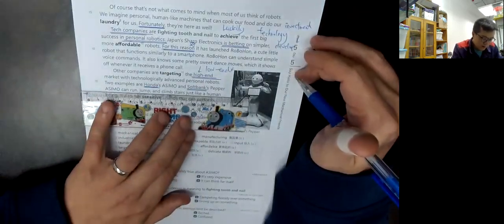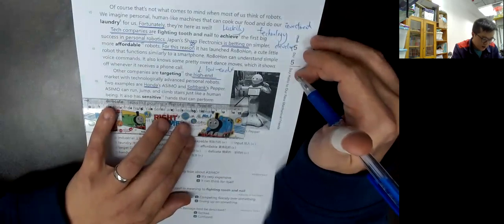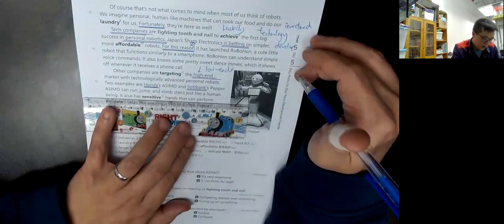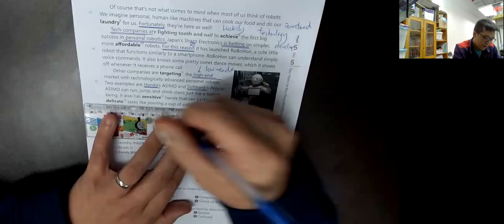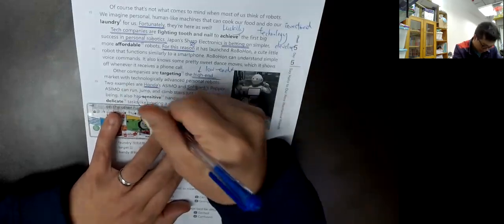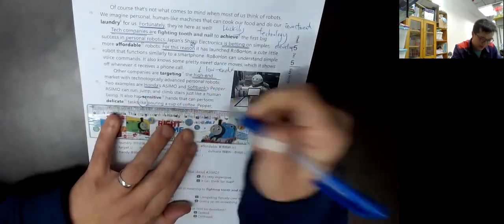ASIMO can jump, run, and climb stairs just like human beings. It also has sensitive hands that can perform delicate tasks, like pouring a cup of coffee.